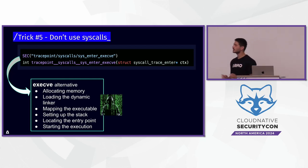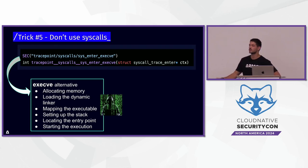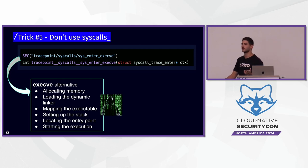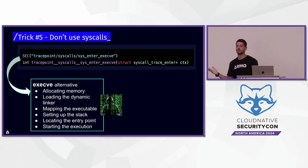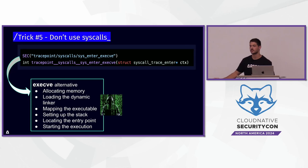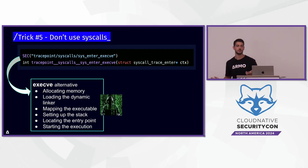The next trick is not too commonly usable, but it showcases the problem of only hooking system calls: you can implement your own system call without actually making the system call. For example, if you want to implement execve — there are a lot of POCs on GitHub for that — you can allocate the memory yourself, load the dynamic linker, map the executable sections into memory, set up the stack, and start your thread at the entry point of the process. This bypasses the execve system call entirely.